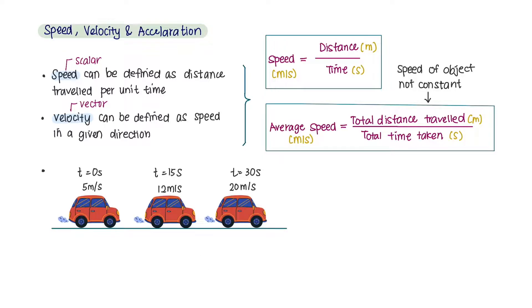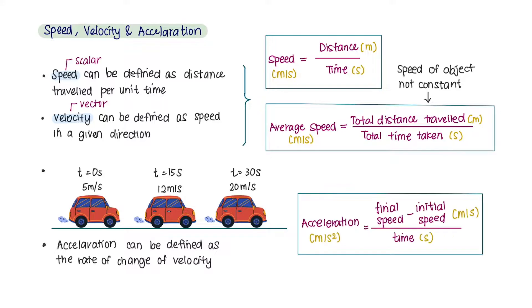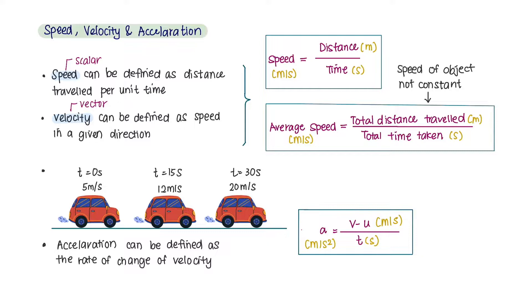Next, acceleration. Acceleration can be defined as the rate of change of velocity. In other words, it describes how much an object's velocity changes every second. The equation to calculate average acceleration is final speed minus initial speed over time.